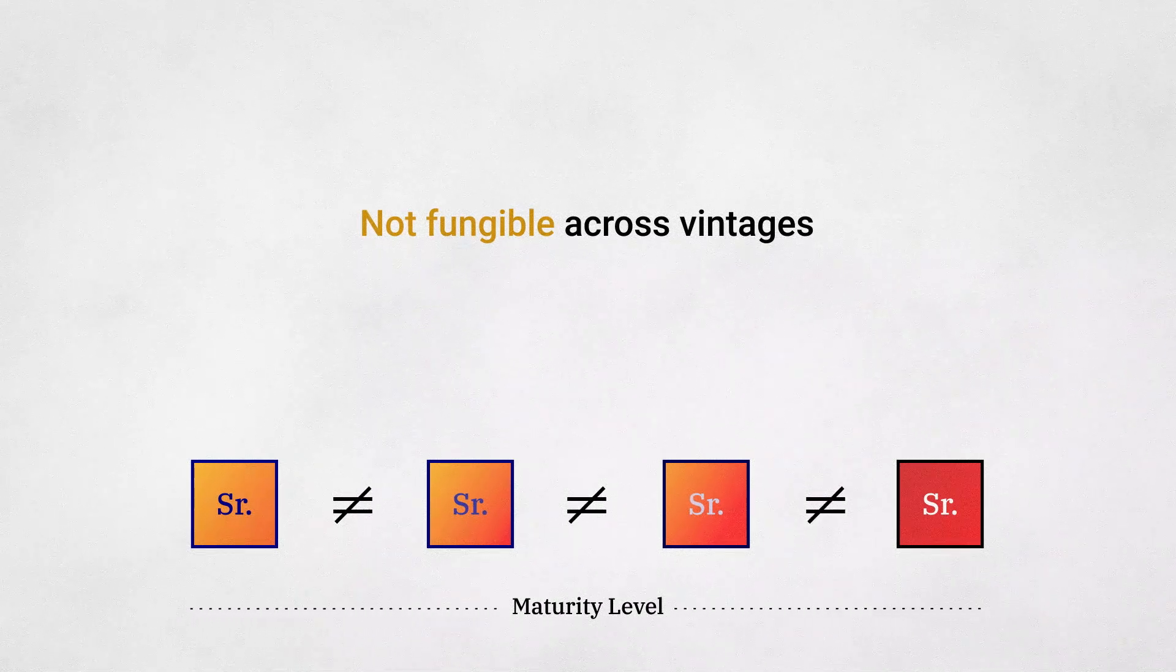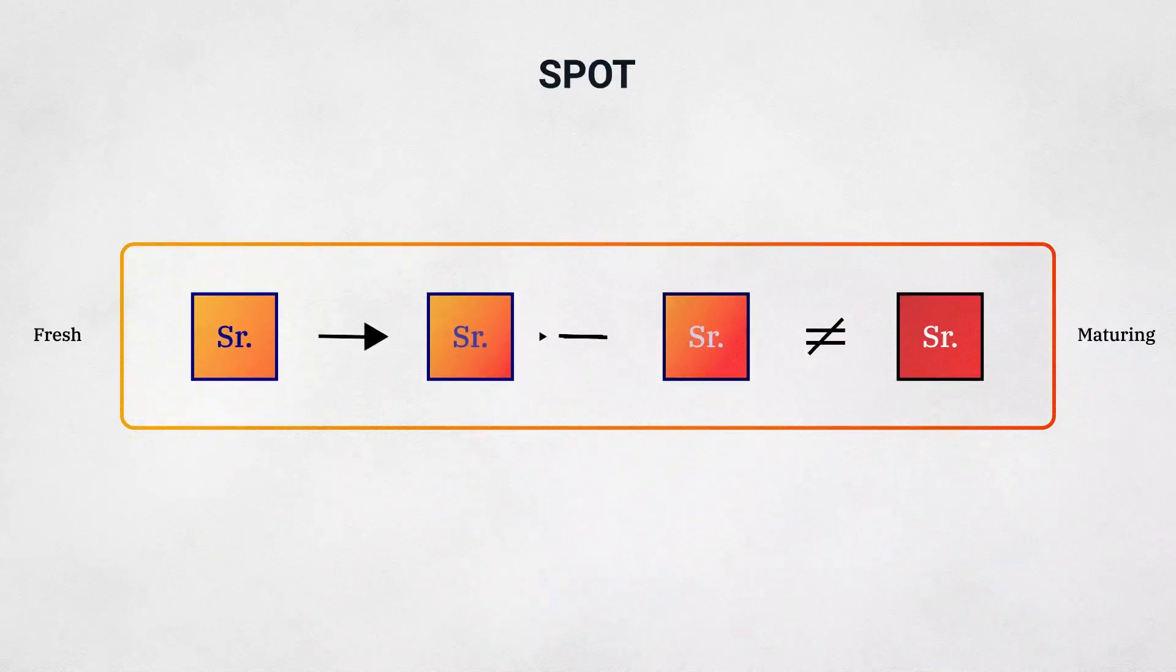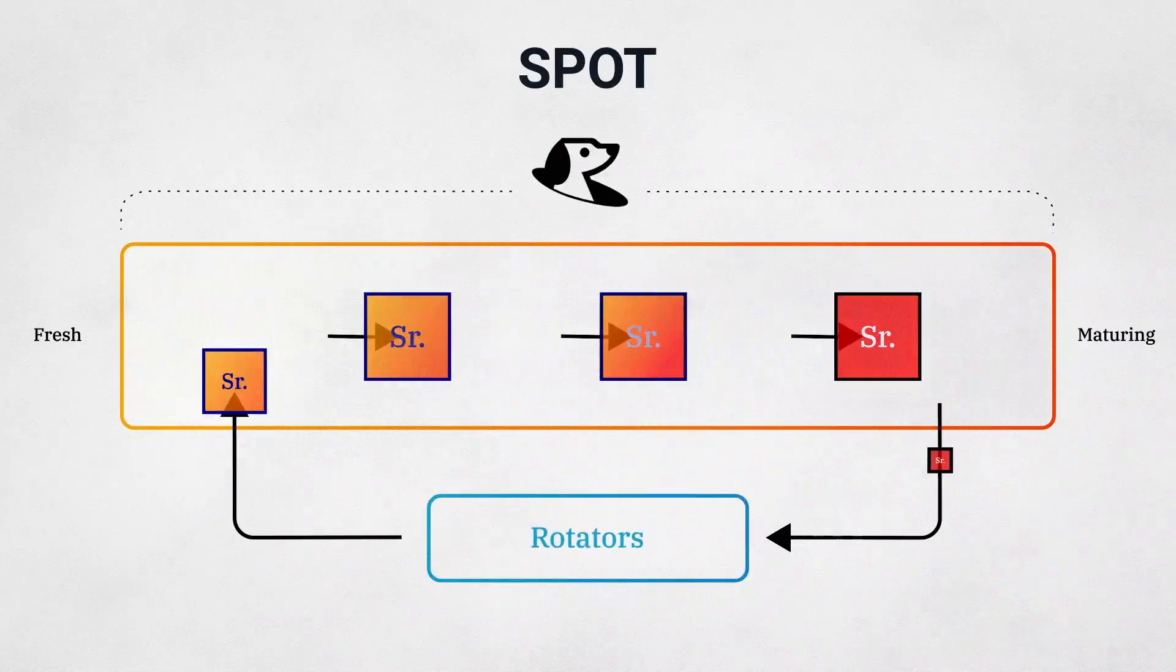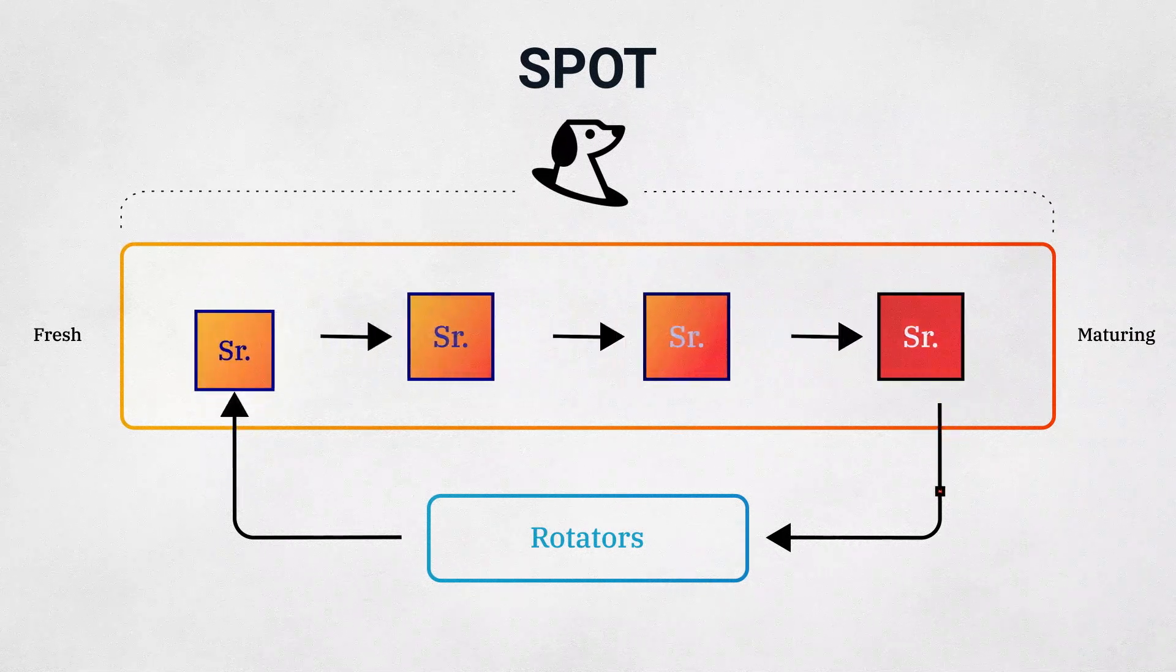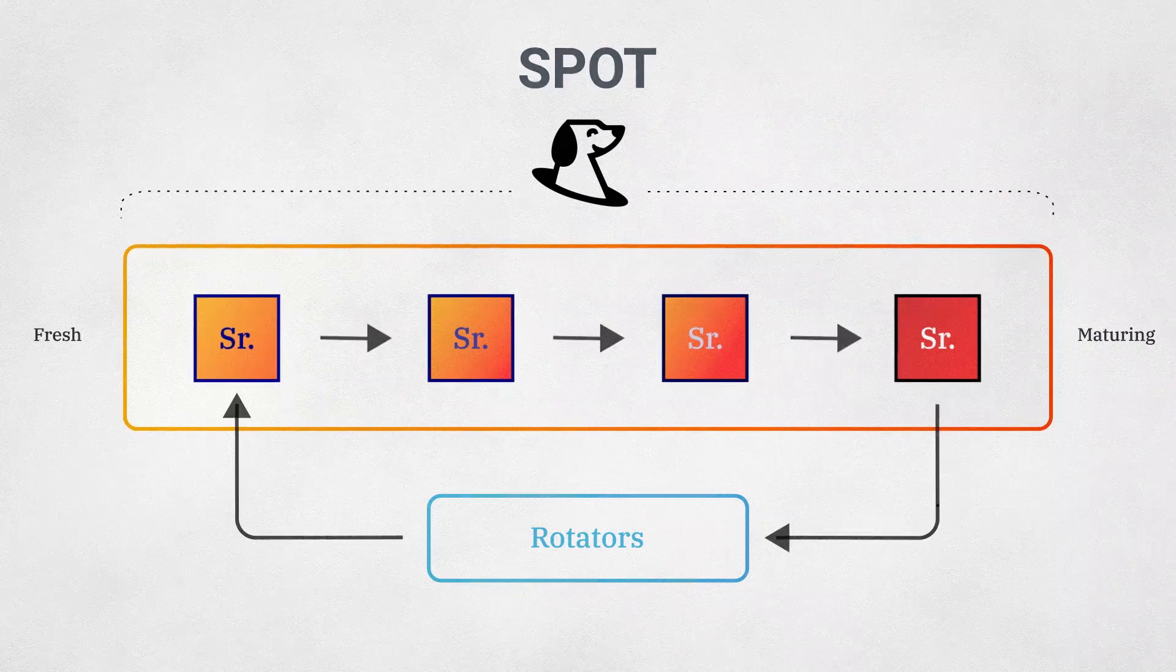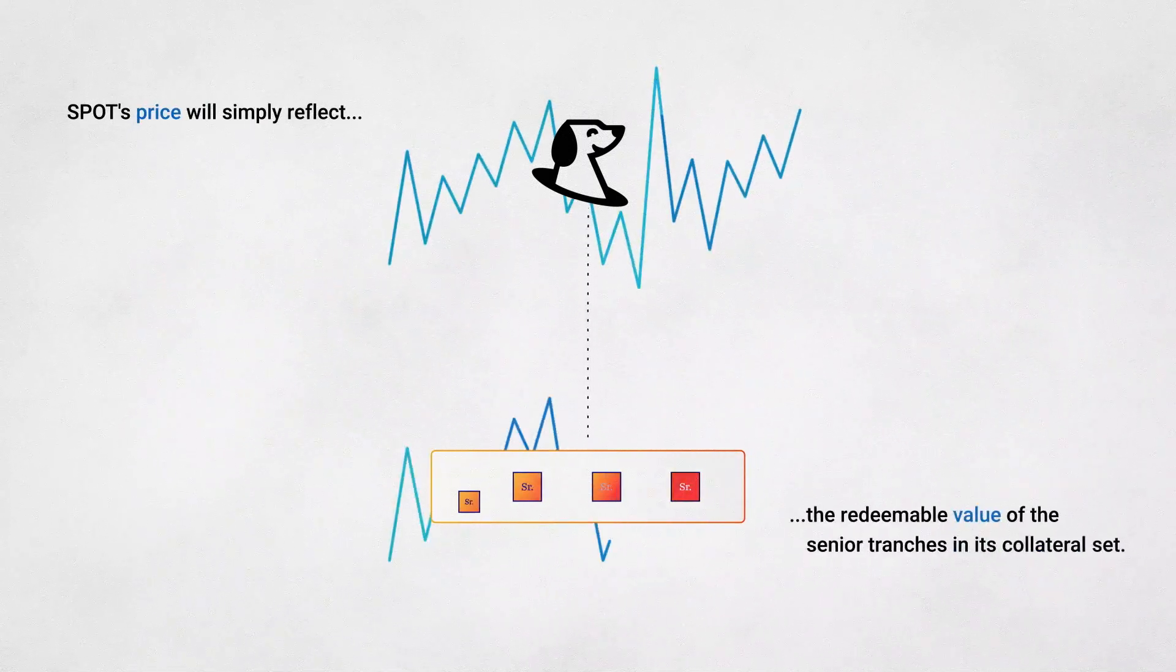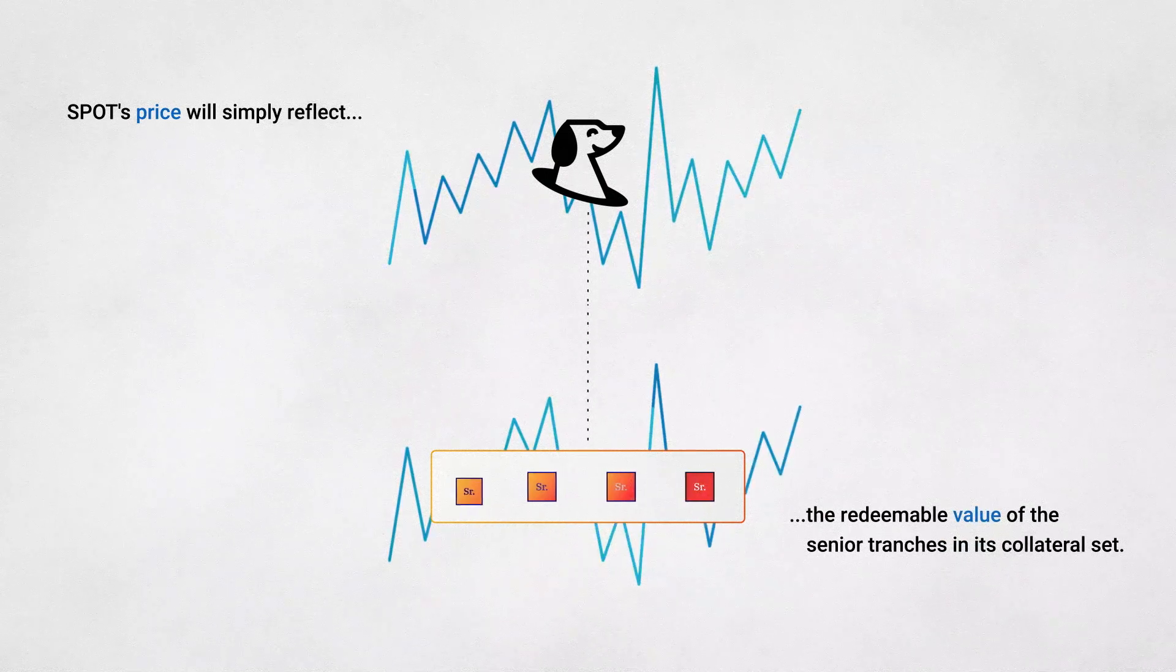To address this, the SPOT protocol bundles senior tranche tokens into a rotating collateral set. SPOT is thus a claim on a basket of rotating senior Ample tranche tokens. You can think of SPOT as a continuous Ample senior tranche. And the price of SPOT at any given time will simply reflect the redeemable value of the senior tranches in its collateral set.